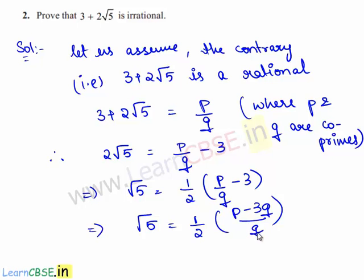Since p and q are integers, 1 by 2 times p minus 3q by q is a rational number. Therefore, from the above equation, we obtain root 5 is a rational.